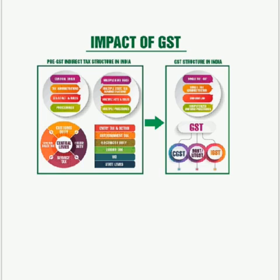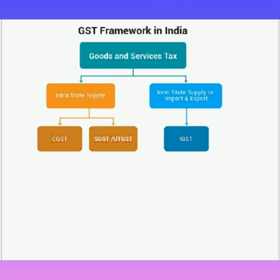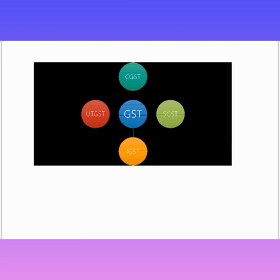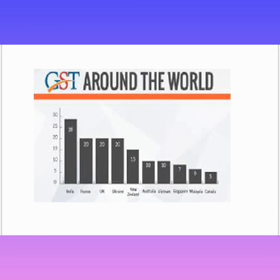Now let's talk about the components. There are three main components under GST law: CGST, SGST, UTGST, and IGST. Central GST and State GST are levied on intra-state supply, that is supply within the state. UTGST is levied on union territory supplies, and Integrated GST is levied on inter-state supply — that is, supply from one state to another state. It also covers import and export.